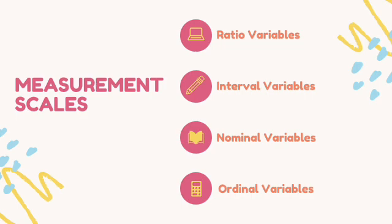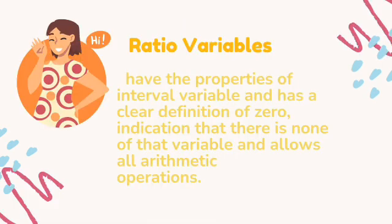For the measurement scales, there are four types: ratio, interval, nominal, and ordinal. Ratio and interval are both numerical, while nominal and ordinal are both categorical. Ratio variables have the properties of interval variables and have a clear definition of zero, indicating that there is none of that variable, and allow all arithmetic operations. Examples include age, height, weight, distance, and number of siblings.